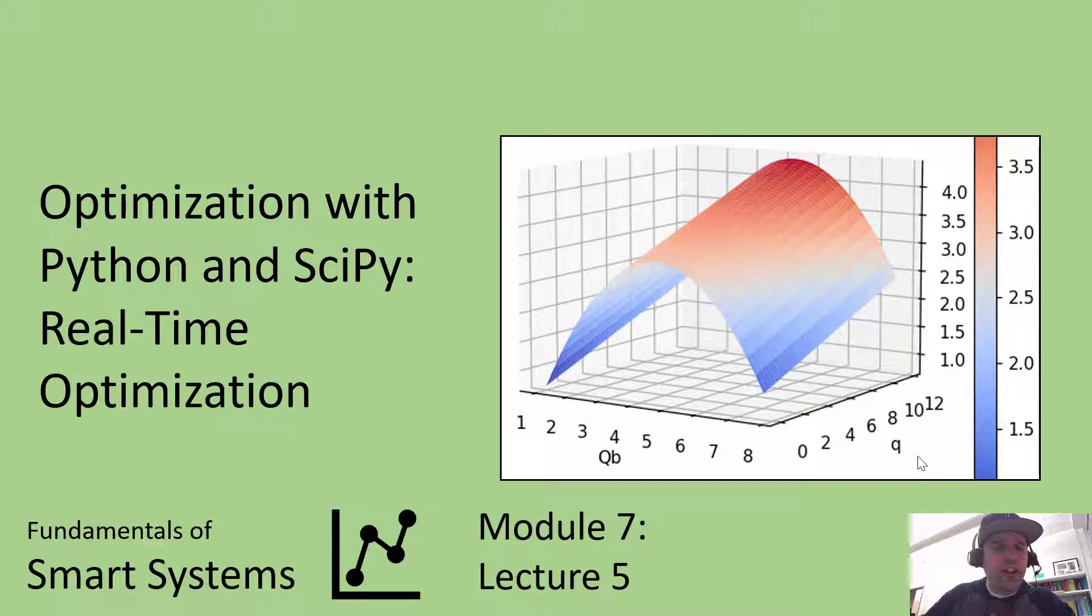Welcome to this video lecture. We're talking about optimization with Python and SciPy. We're also going to talk about real-time optimization, which is the focus of this module. How do you use optimization to account for changing parameters in a changing environment so that you can continuously solve this optimization problem to make sure that your system is performing optimally even as conditions change.